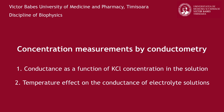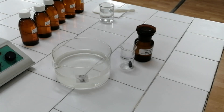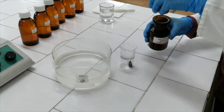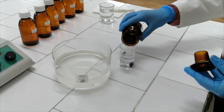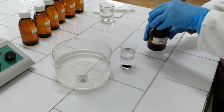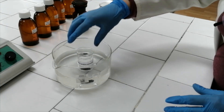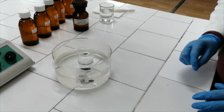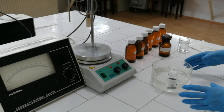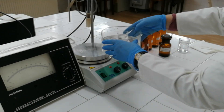In the second part of this experiment, you will study the temperature effect on the electrical conductance of electrolyte solutions. For this, you will use a potassium chloride solution of known concentration. Pour this solution in the measuring Berzelius glass and place it in the crystallizer. Add tap water in the crystallizer to avoid the fast and uneven heating of the study solution. Place the crystallizer on the magnetic steerer hotplate.